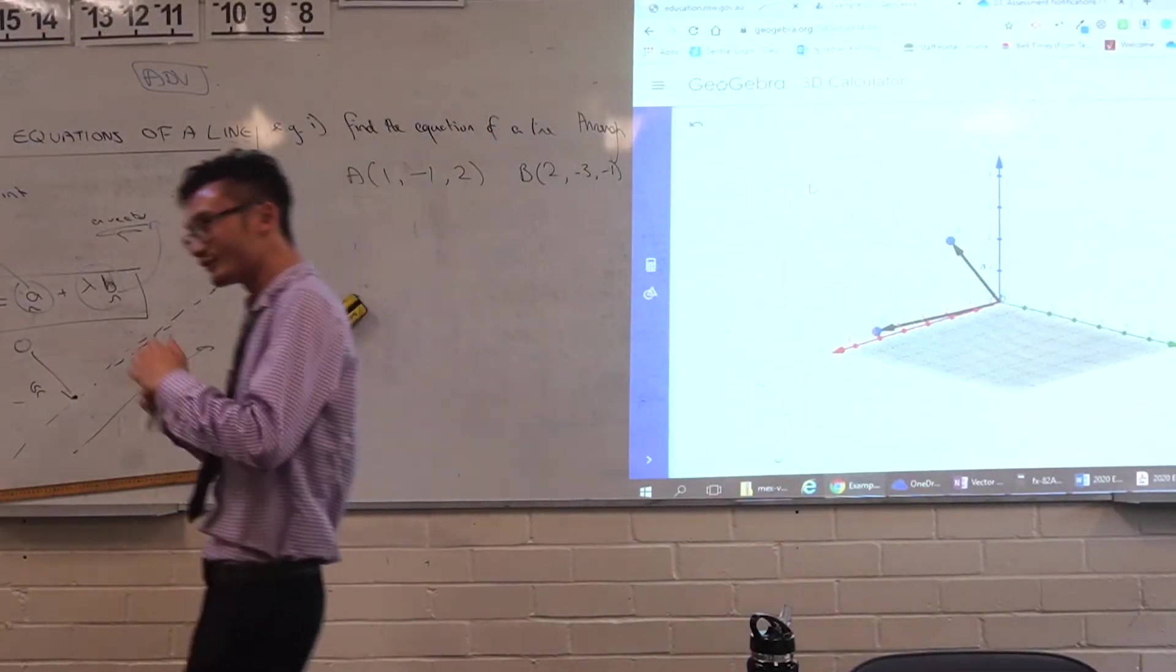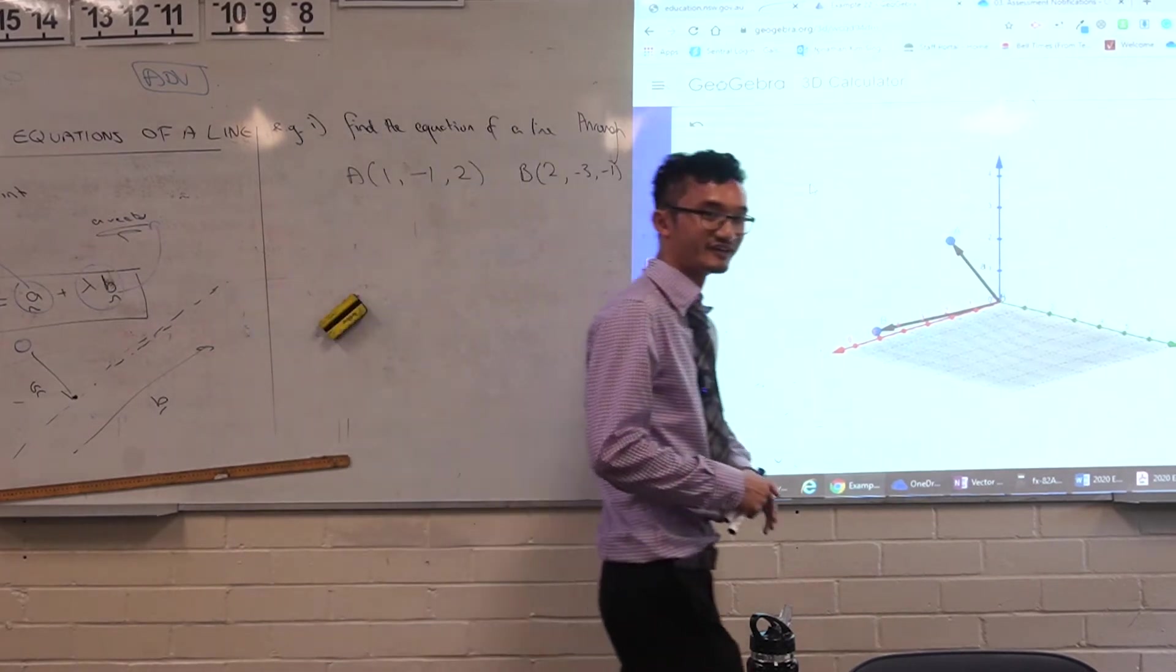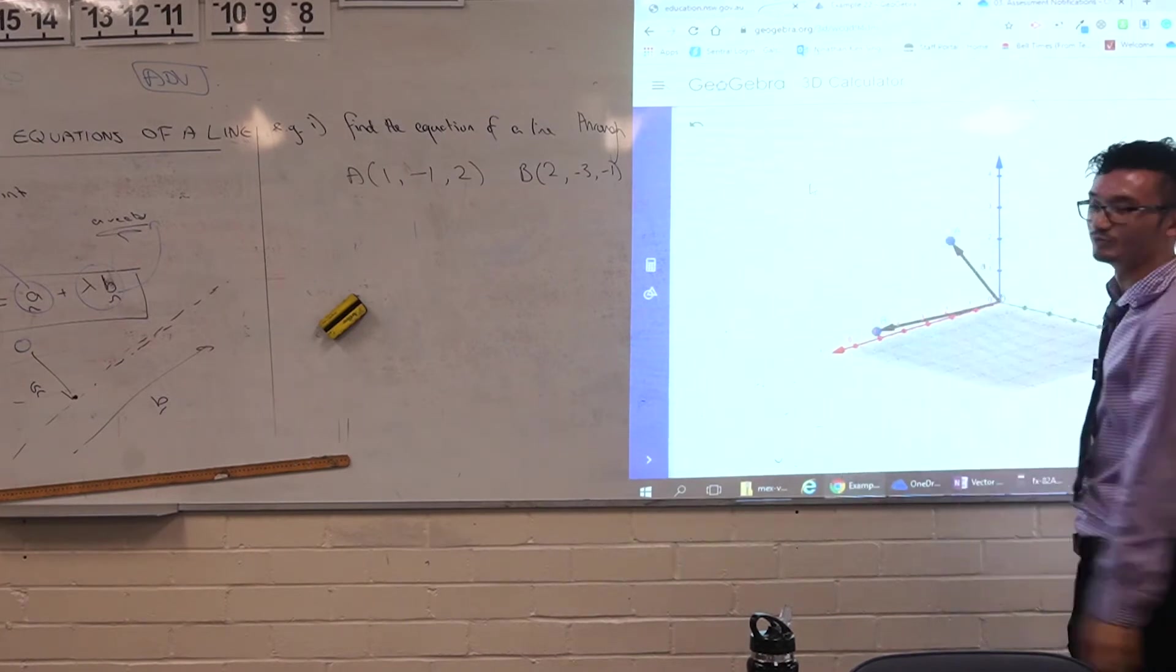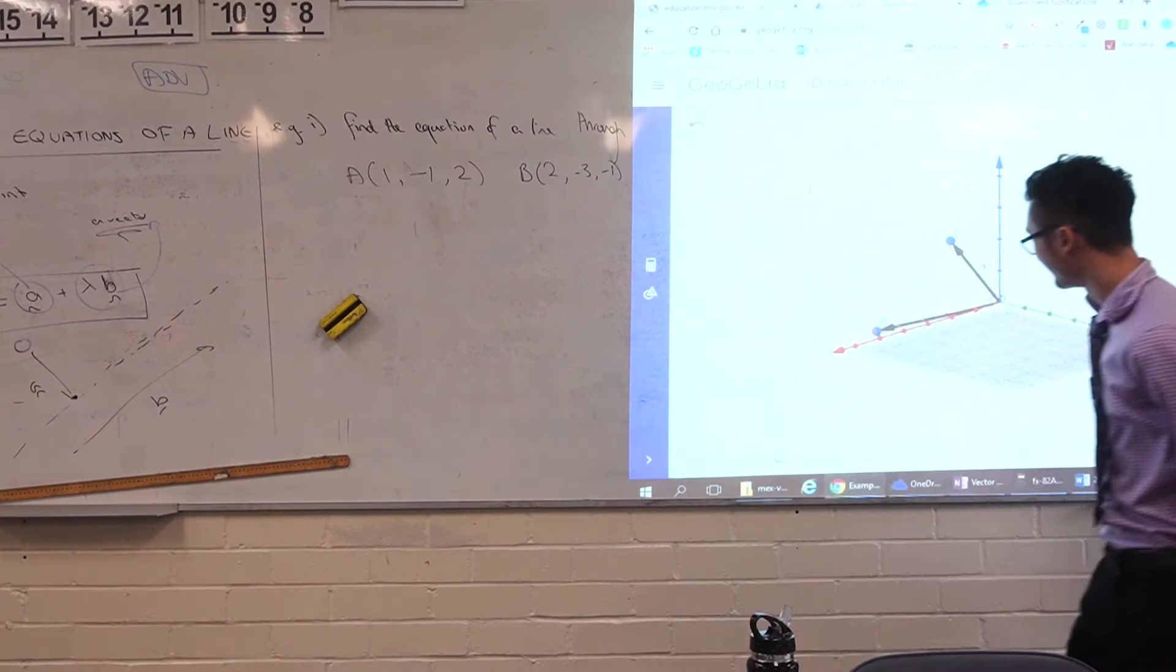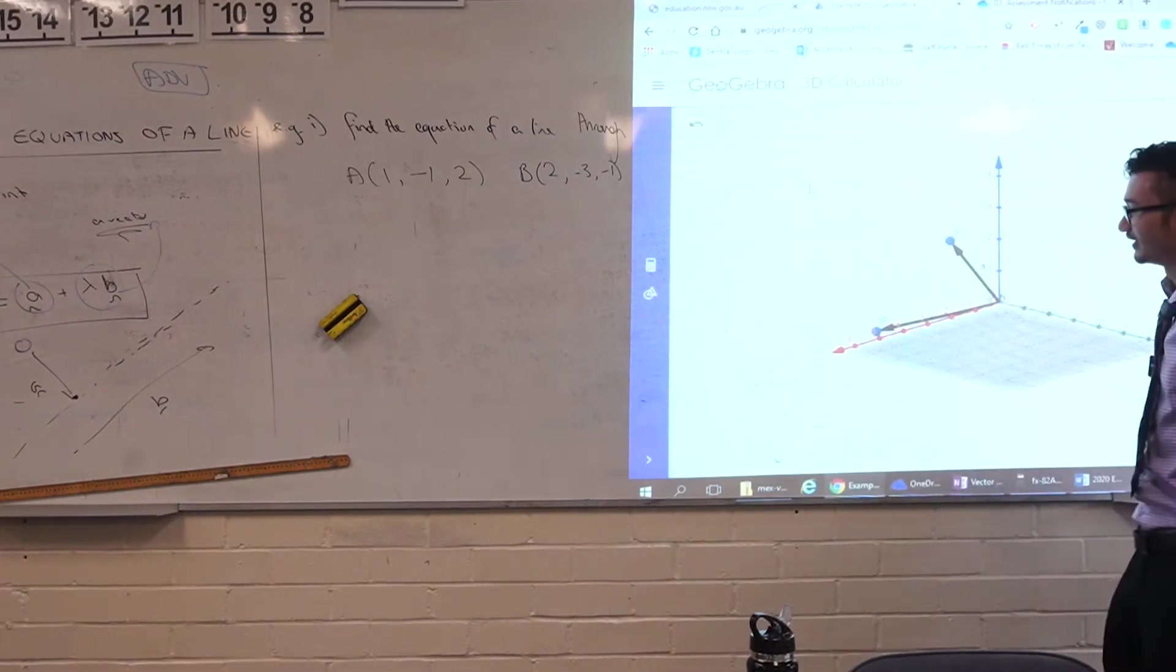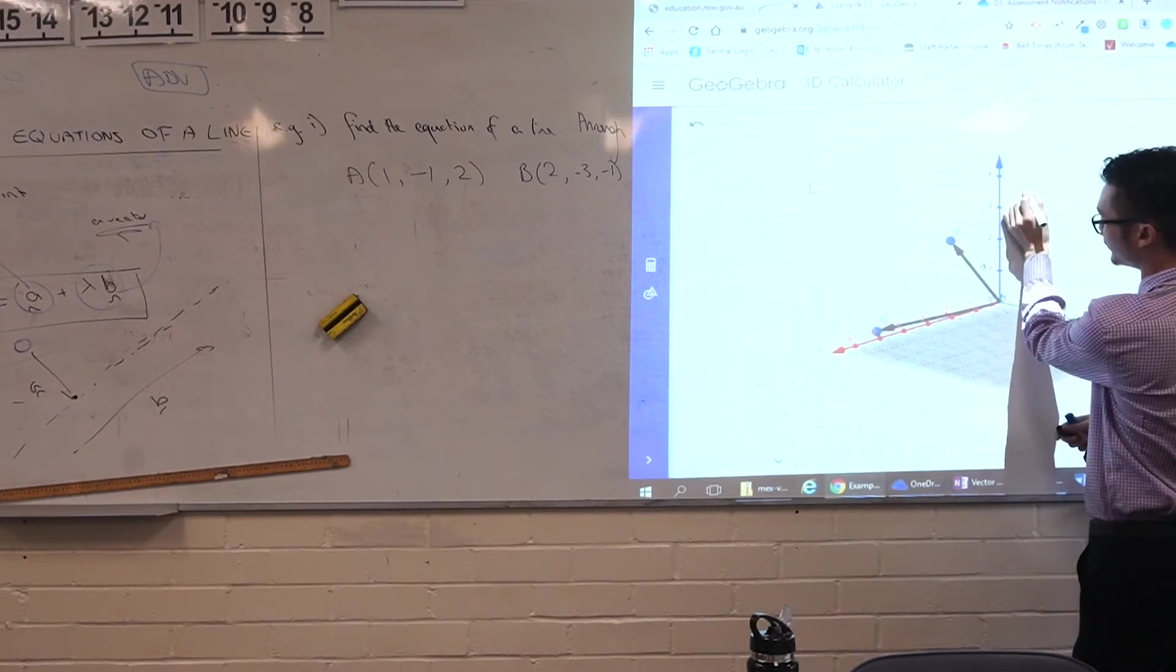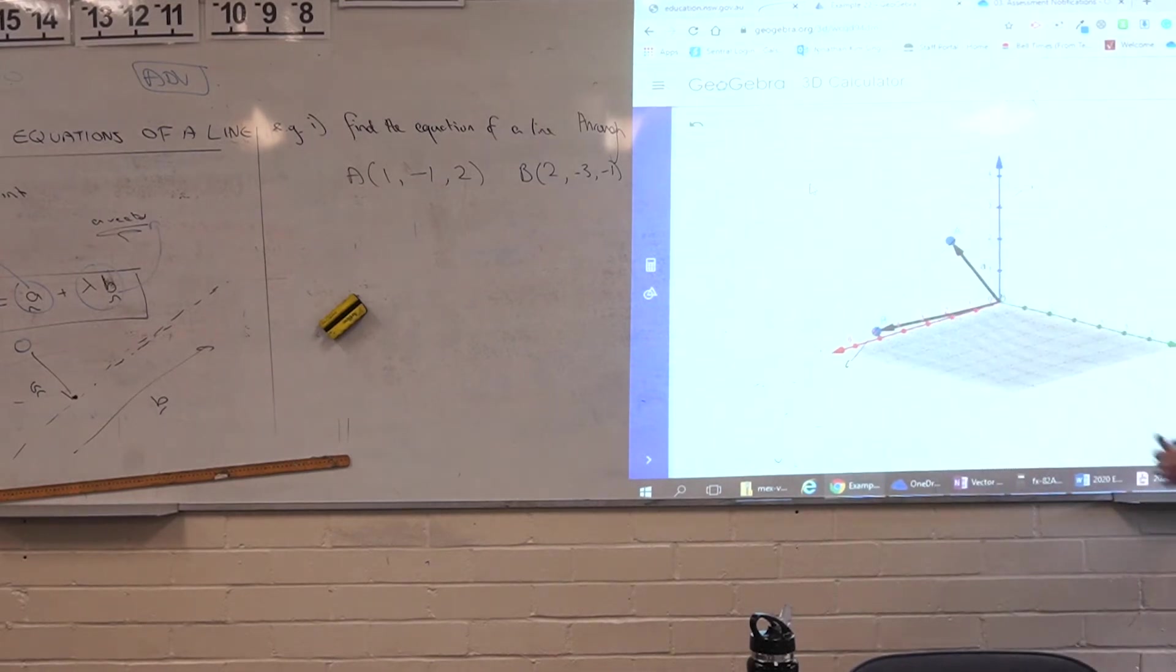Now, I said that for a vector equation of a line, we need a point and a vector, right? But this is slightly different now, because they're not exactly giving you that. They're saying, I need the equation of a line through these two points here. So just be aware that these two vectors, none of them are actually the direction vector. Can you see why? Because we can't find the direction vector. How would we find it? Because we want the equation line that goes through like that, but none of these vectors are actually going in that direction.